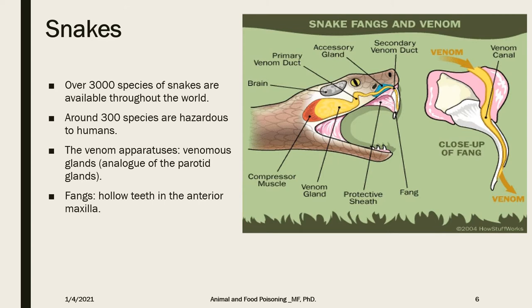We'll start by talking about snake bites. There are over 3,000 species of snakes distributed all over the world, and approximately 10% of these snakes are significantly hazardous to humans. In Egypt, the most famous types are the viper, which lives in the desert, and the cobra, which lives in the Nile Valley.